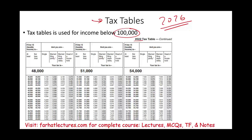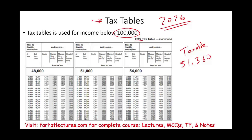If your taxable income is less than $100,000 — let's assume your taxable income is $51,360 — you will go and figure out where $51,360 falls. It falls between $51,350 and $51,400. Then you determine your filing status. Let's assume you're single. Your taxes will be $6,920. It's as simple as that. You look up where you fall, and that's your tax amount.